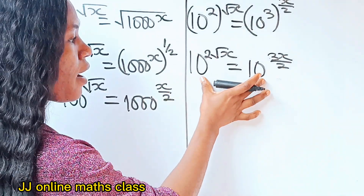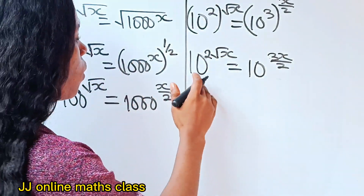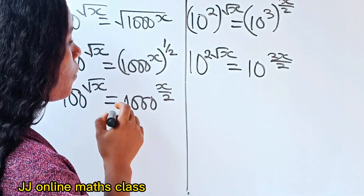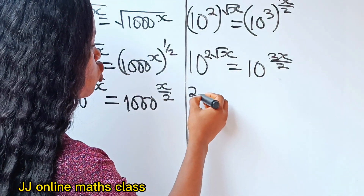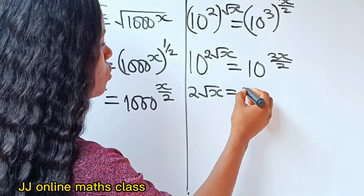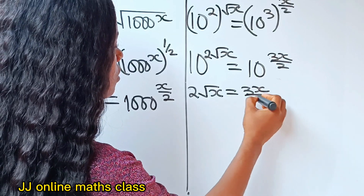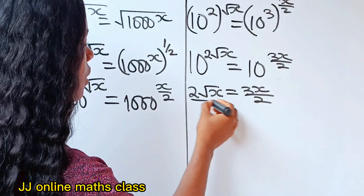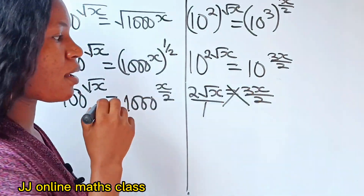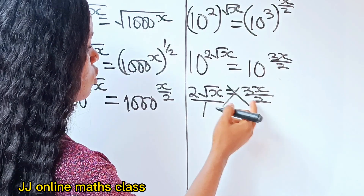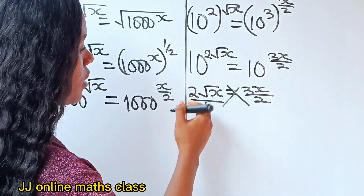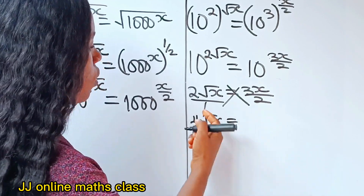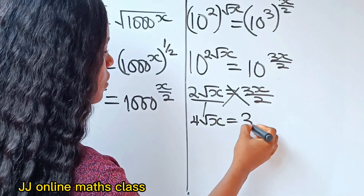They have the same base, and once they have the same base you can equate the powers. So we can write that 2 root x is equal to 3x over 2. Now let's cross multiply: 2 times 2 root x gives us 4 root x, is equal to 3x.